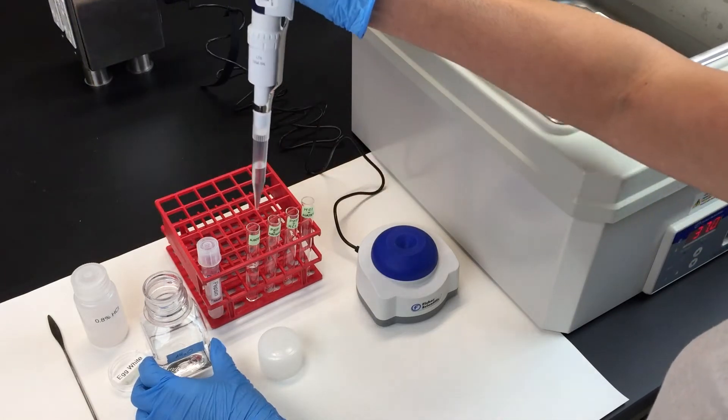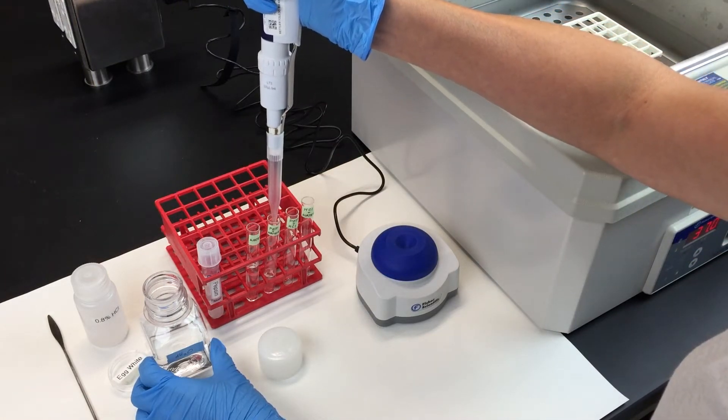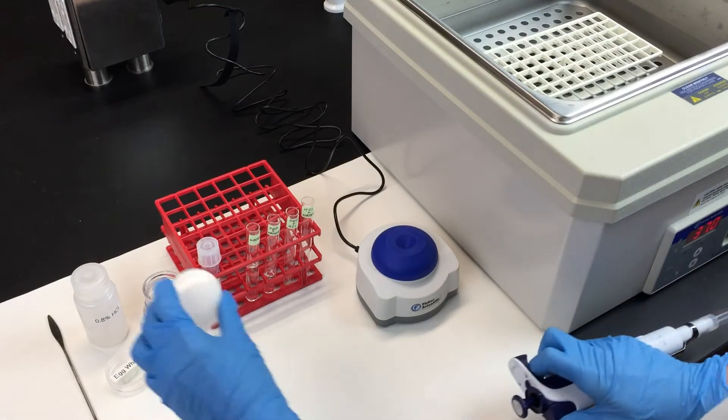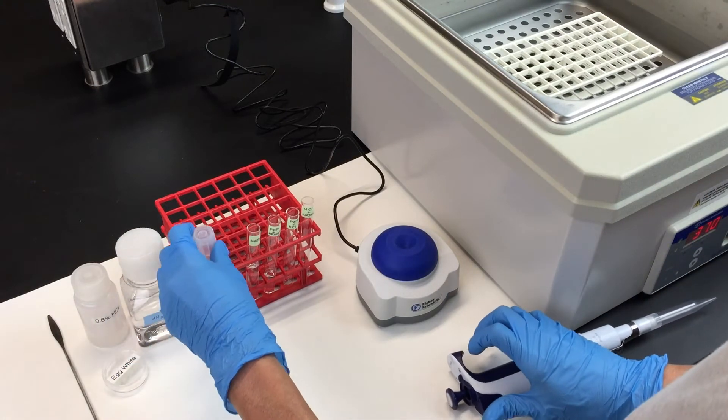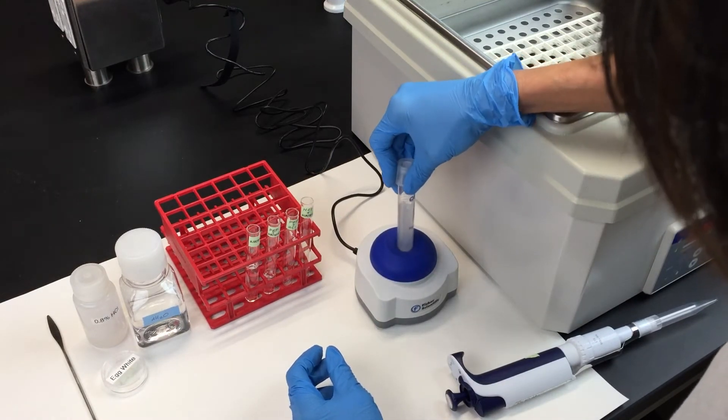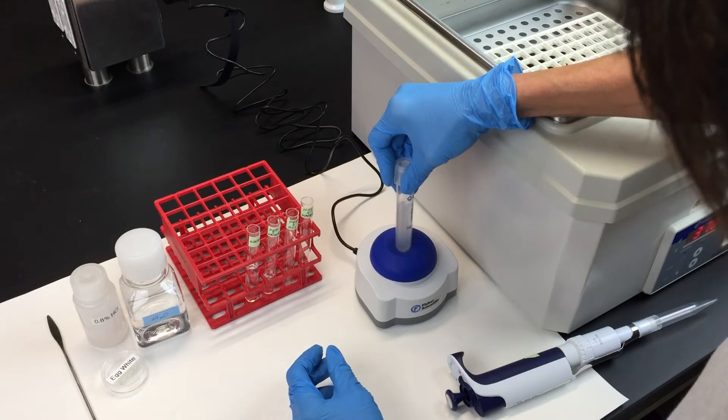The second test tube will have 2.5 milliliters of water and 2.5 milliliters of pepsin. Make sure you mix the pepsin well before you add it, because it will settle to the bottom of the test tube over time.